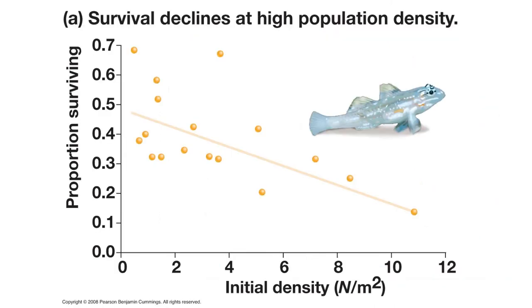As population density increases, the proportion of survivors decreases, because density-dependent biotic factors intensify — competition increases and disease spreads more rapidly — both reducing survival rates.